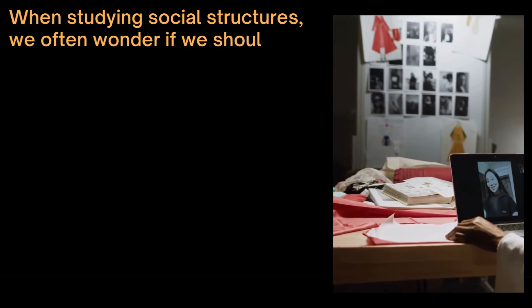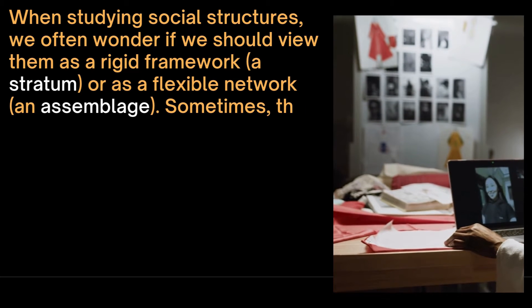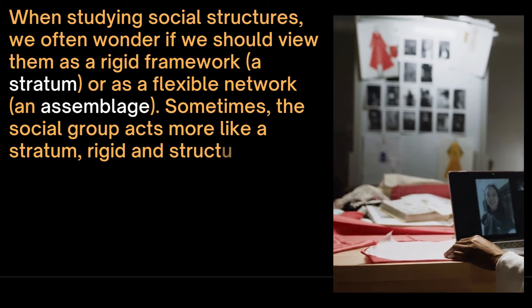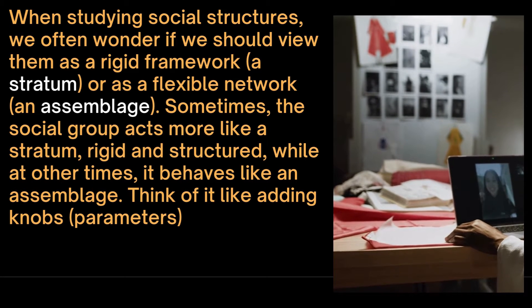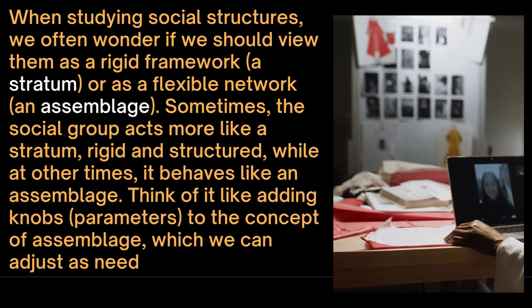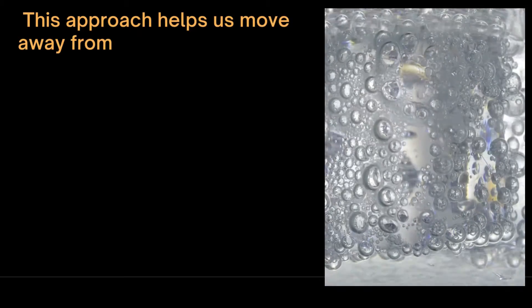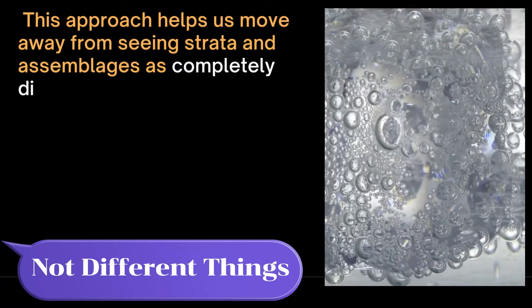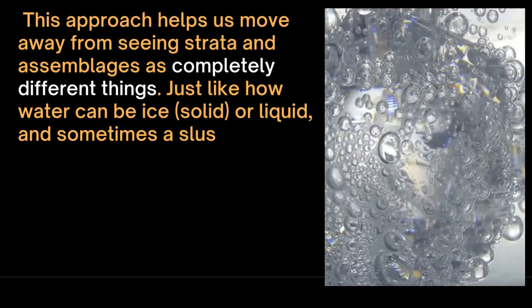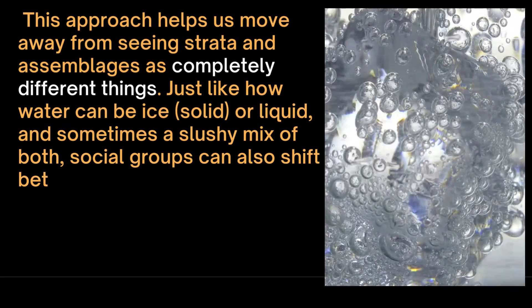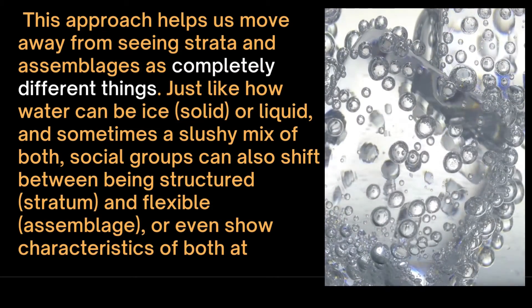When studying social structures, we often wonder if we should view them as a rigid framework — a stratum — or as a flexible network. Sometimes a social group acts more like a stratum, rigid and structured, while at other times it behaves like an assemblage. Think of it like adding knobs or parameters to the concept of an assemblage, which we can adjust between stratum and assemblage. This approach helps us move away from seeing strata and assemblages as completely different things. Just like water can be ice or liquid or a slushy mix of both, social groups can shift between being structured as in a stratum and flexible as in an assemblage, or show characteristics of both at the same time.